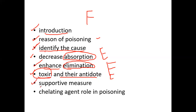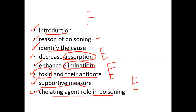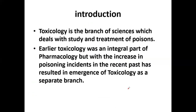We will discuss different types of toxins and their antidotes, including benzodiazepines, barbiturates, and others. We will also discuss supportive measures for poisoning patients, how to properly handle them, and the role of chelating agents in poisoning from heavy metals like lead, mercury, and arsenic. A complex is formed with these heavy metals and they are then eliminated from the body.